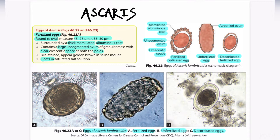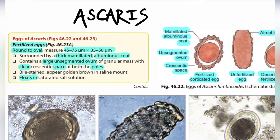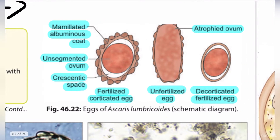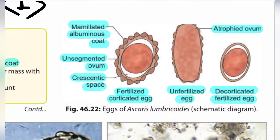The two types are the fertilized egg and the unfertilized egg. The fertilized egg is round to oval, measuring 45 to 75 micrometers by 35 to 50 micrometers. The fertilized corticated egg is covered by a thick albuminous coat, while the unfertilized egg consists of a thin albuminous coat.